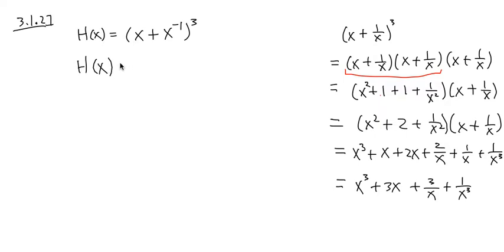H of x is equal to x to the third power plus 3x plus, this is 3 over x, but let me write it in the power form, 3x to the negative 1. Then, plus I have 1 over x to the third power. Let me write it as x to the negative 3 power. Then, we are ready to use the power rule.